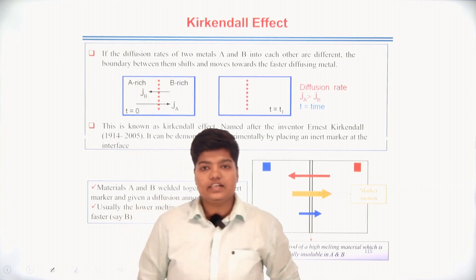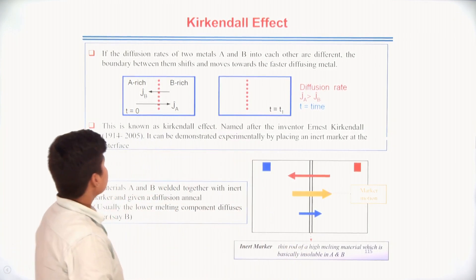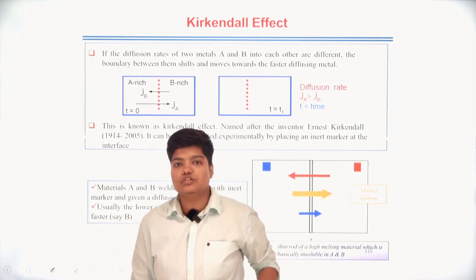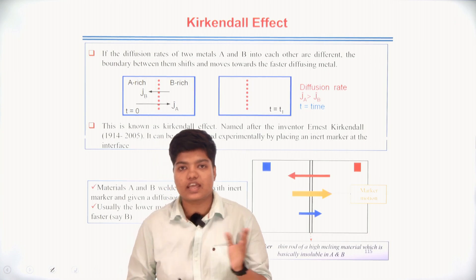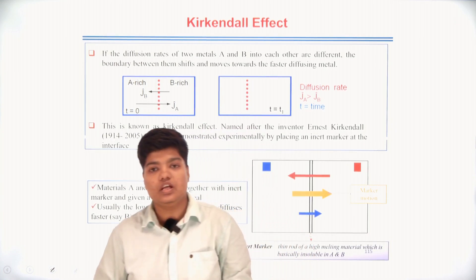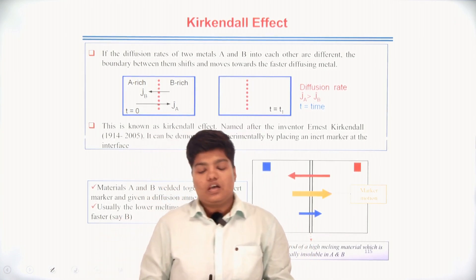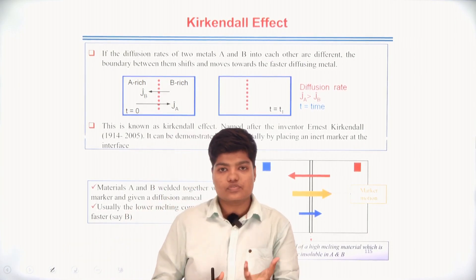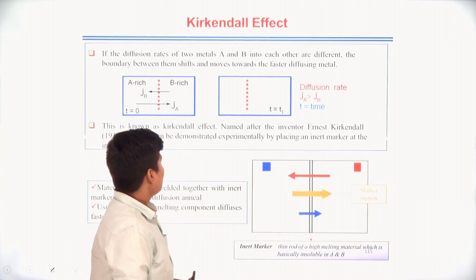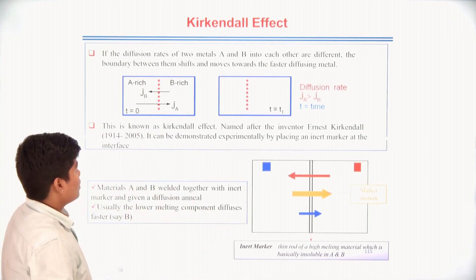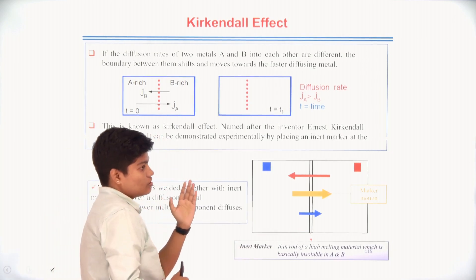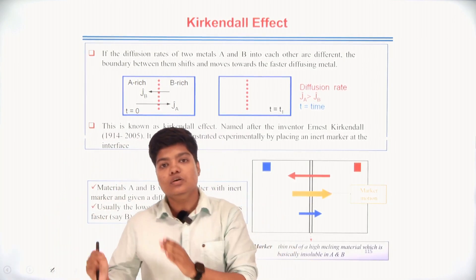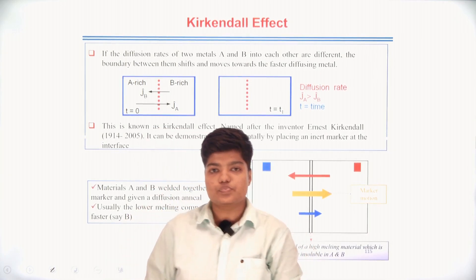Let's start today's class with the Kirkendall effect. The Kirkendall effect means: let there be two different elements A and B of different composition. If they are coming closer and going through the diffusion process, after diffusion the boundary between them shifts towards the most rapidly diffusing species.